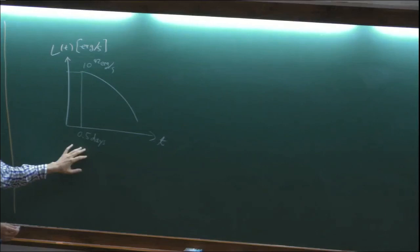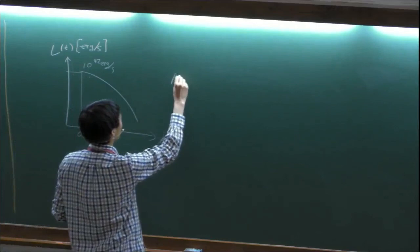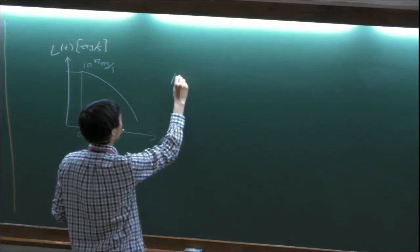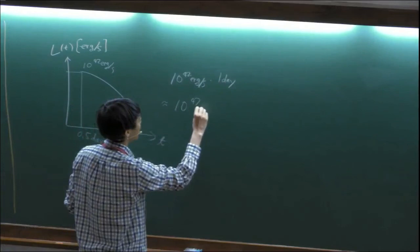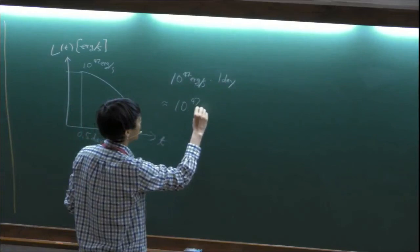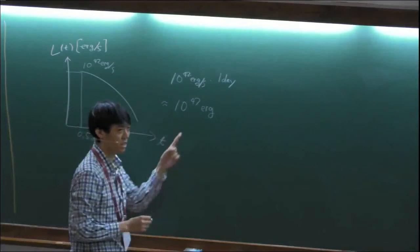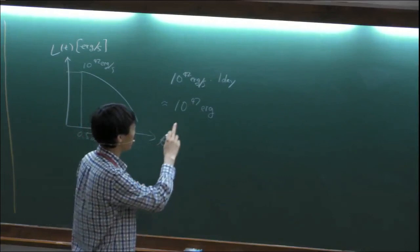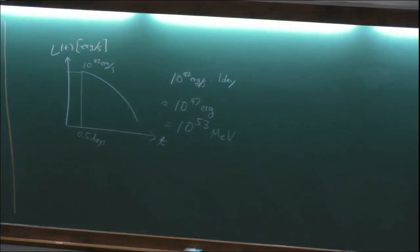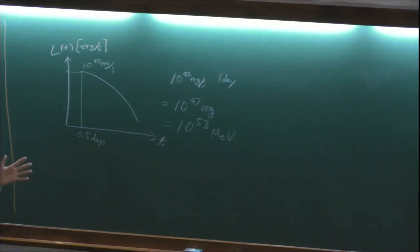If you take 10^42 erg per second at 0.5 days and multiply by 1 day, you need at least about 10^47 erg to explain this emission. Converting to MeV — since 1 erg is about 1 TeV — this peak energy is about 10^53 MeV.